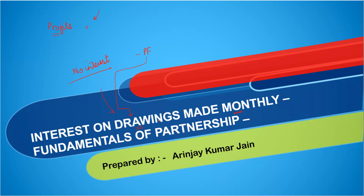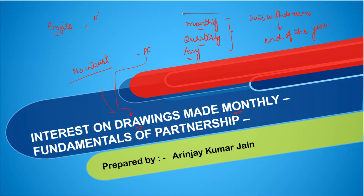These drawings can be made over different periods of time — they can be made on a monthly basis, on a quarterly basis, or on any date. In any of these three cases, if you want to do it simply, you take the date on which the money was withdrawn and from that date until the end of the year you charge interest. But in some cases, given the pattern, we can also apply certain formulas. In this video we will see what happens if drawings are made monthly — at the beginning, middle, or end of the month.